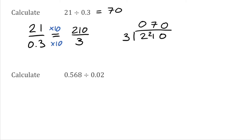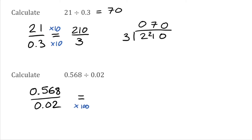For this next question we've got 0.568 divided by 0.02. Again I'm going to write this out as a fraction: 0.568 over 0.02. All we're going to do is find an equivalent fraction. We don't want a decimal on the bottom, so I can multiply 0.02 by 100 which gives me 2. I've got to multiply the bottom by 100 which means I've also got to multiply the top by 100. So on the bottom 0.02 times 100 gives 2, and on the top 0.568 times 100 gives 56.8. We've still got a decimal on the numerator which is absolutely fine — the main thing is we've now got a whole number on the bottom.